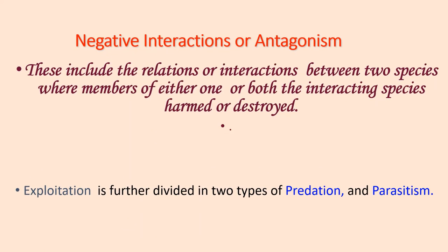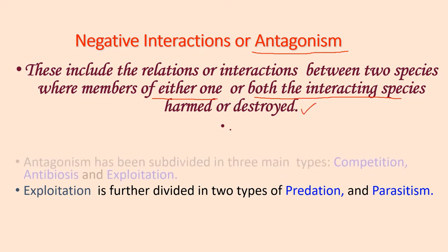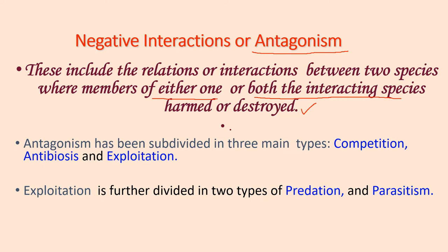In negative interactions, members of either one or both the interacting species are harmed. These are also called antagonism. Negative interactions can be defined as interactions between two species where members of either one or both the interacting species are harmed or destroyed. Antagonism has been subdivided into three main types: number one, competition; number two, antibiosis; and number three, exploitation.